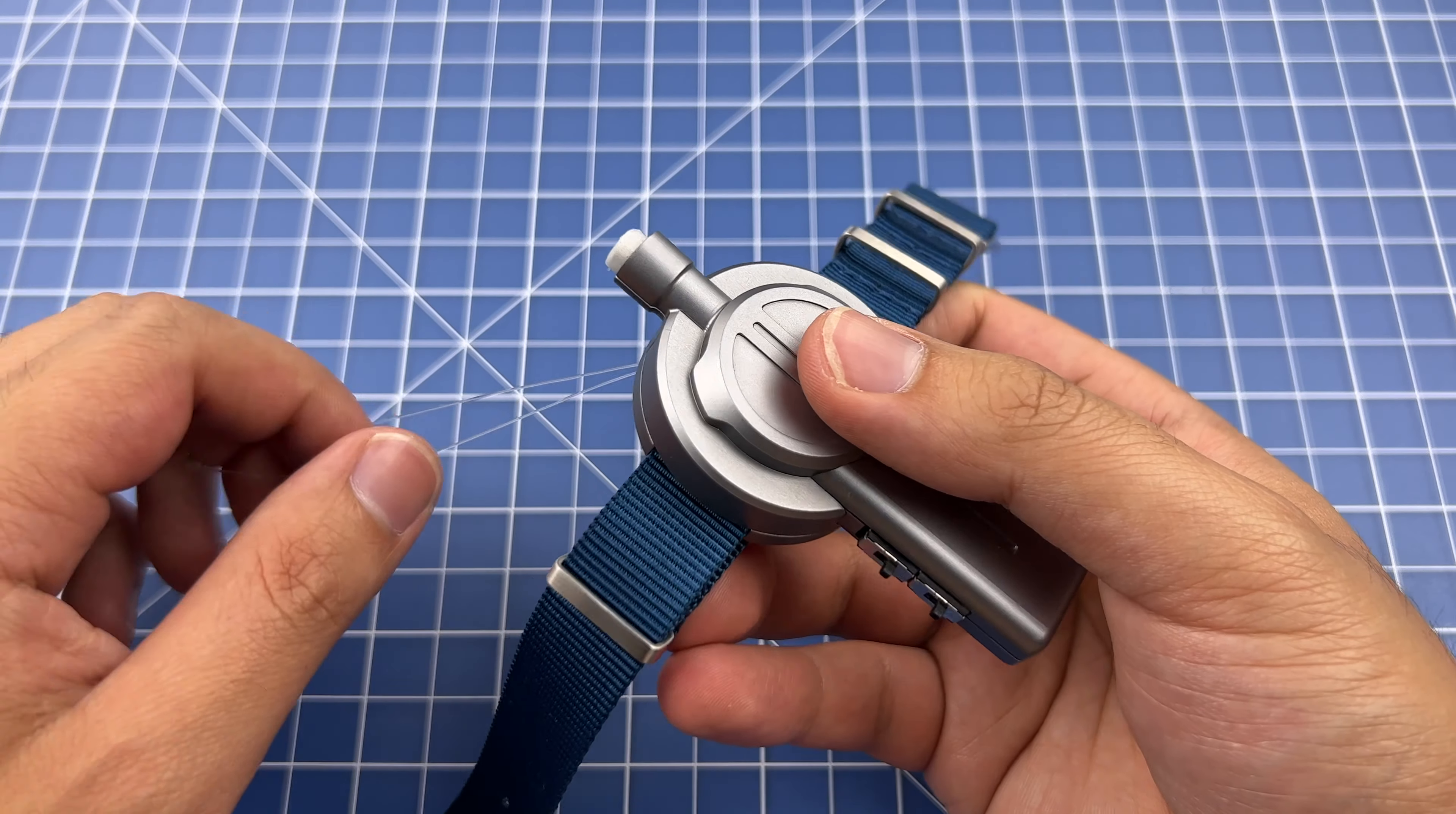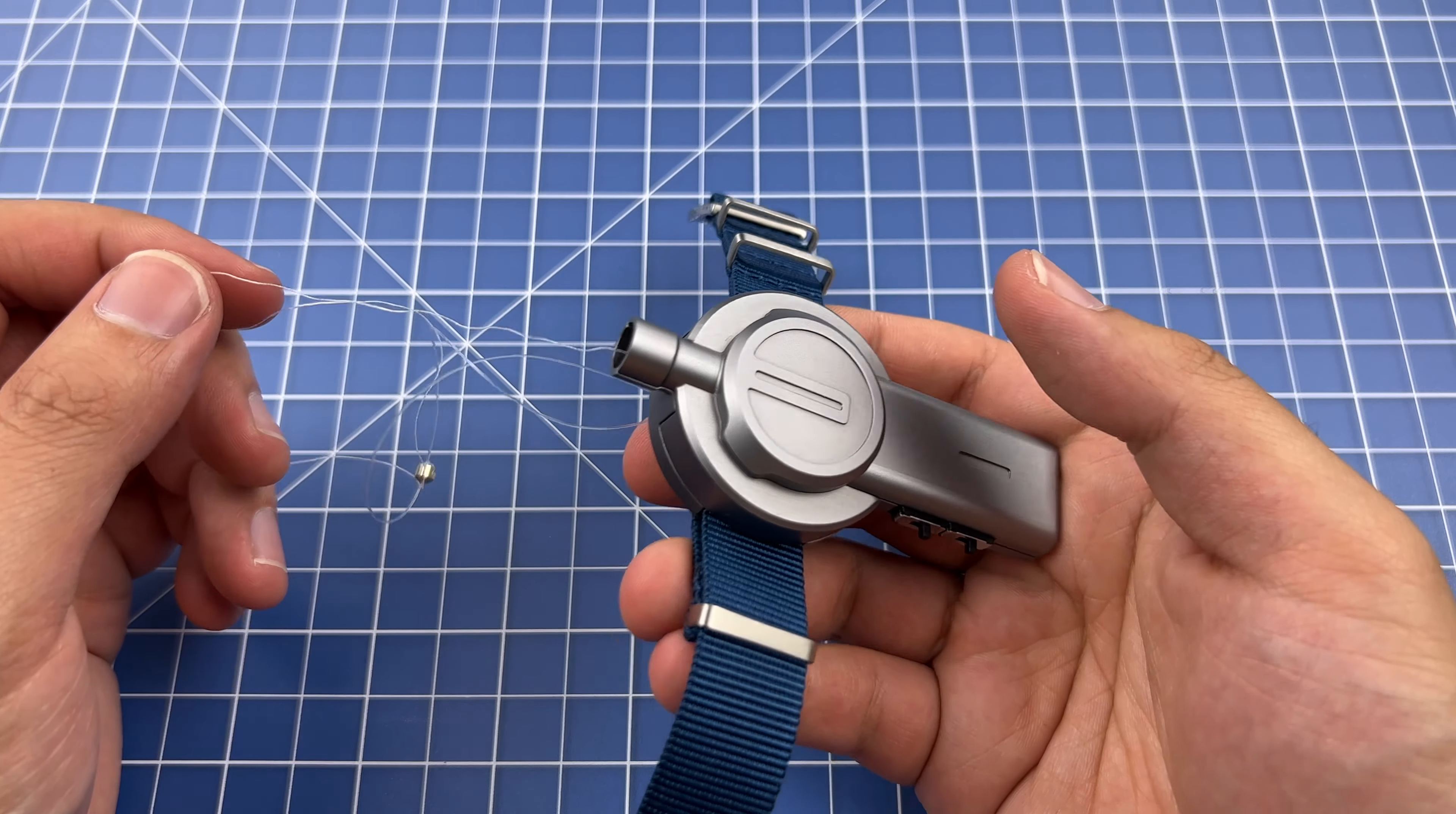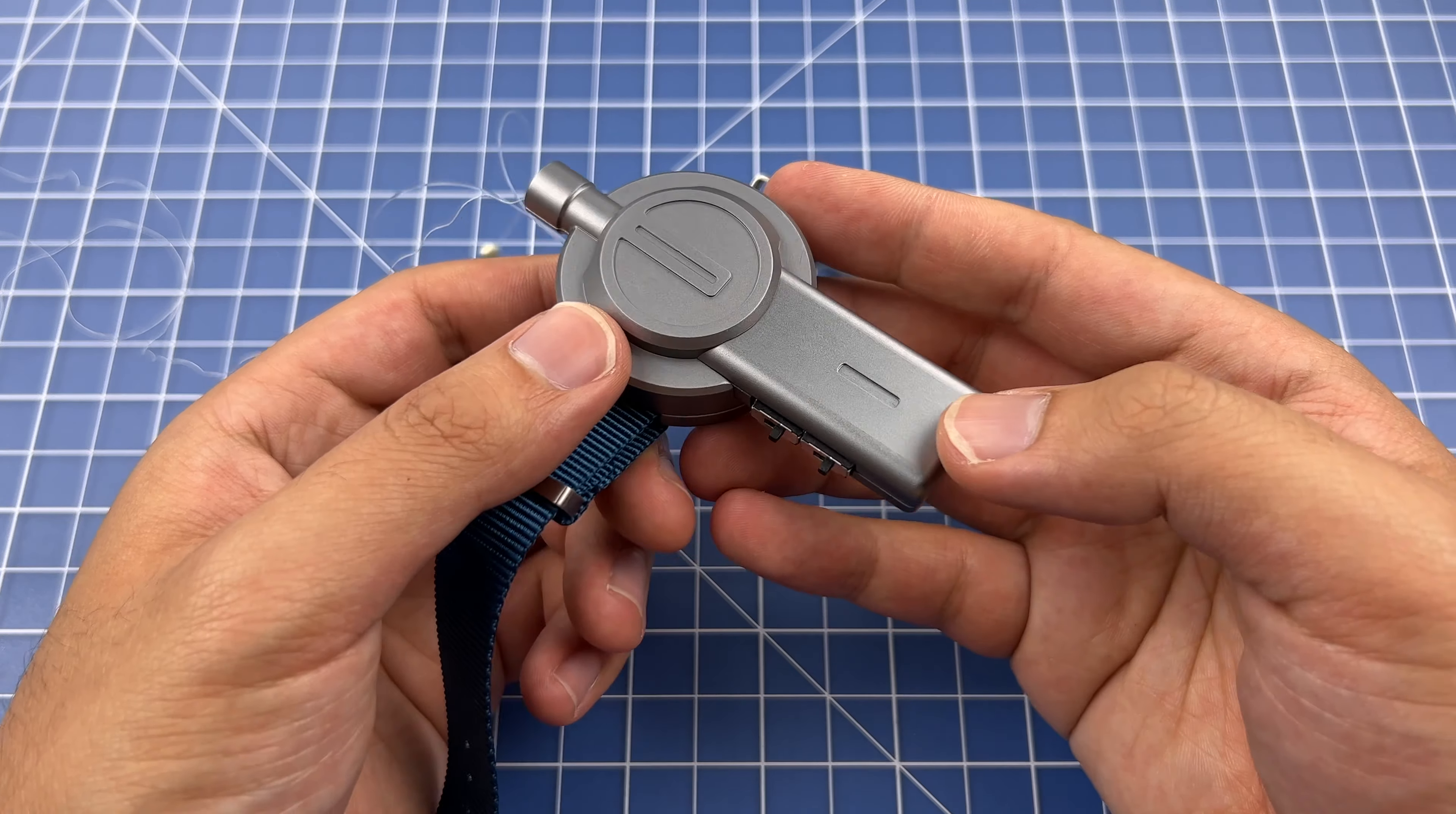Point the Magnus where you want the thread to go, and then pull on the nylon line to trigger it. Once you fire it out, you can follow the same reloading sequence over and over again to keep using the Magnus. It's very important to follow all of the reloading rules every time you use it to make sure the Magnus does not jam or tangle.